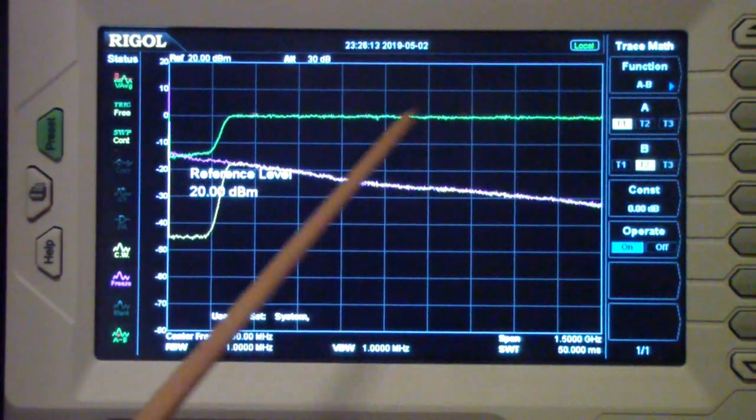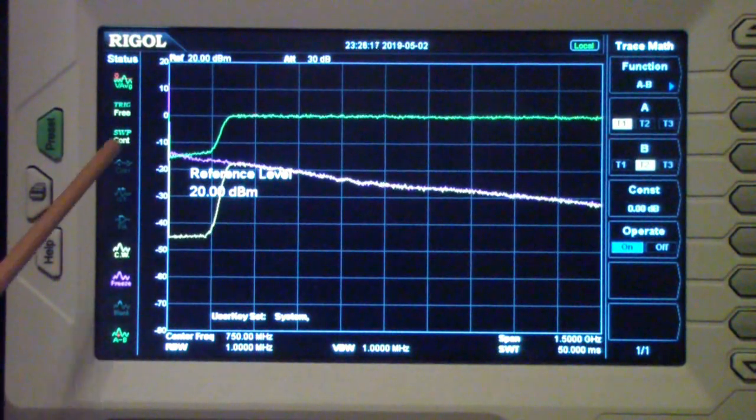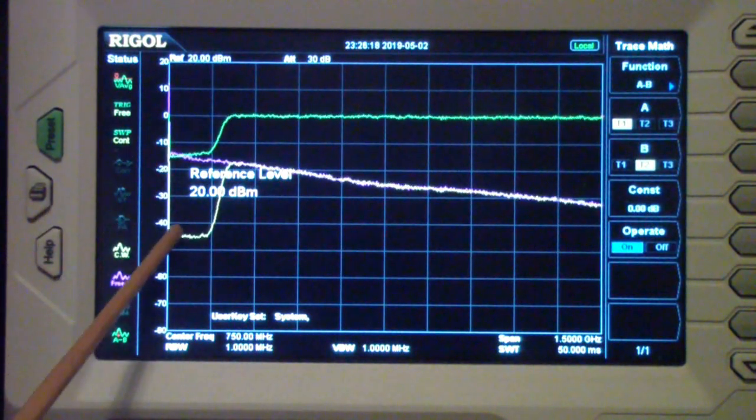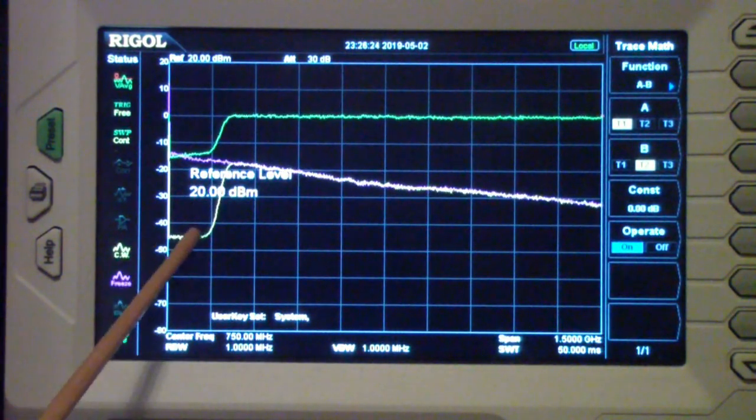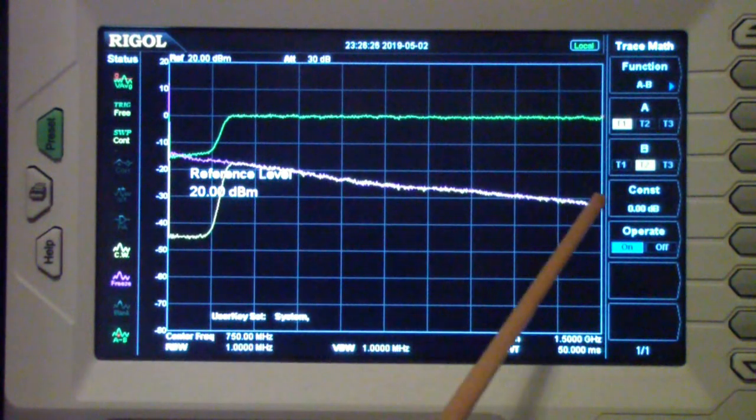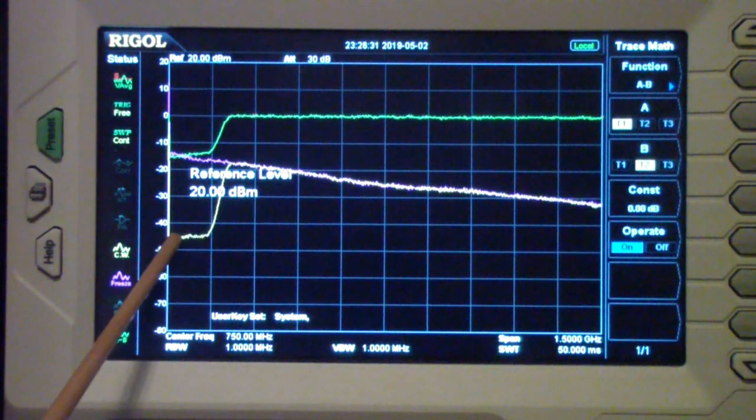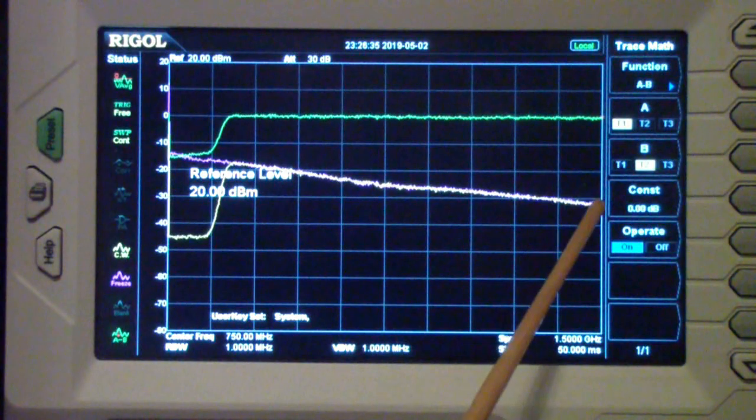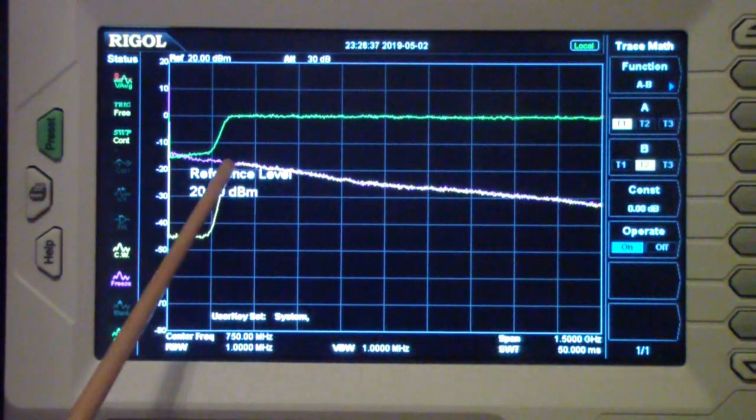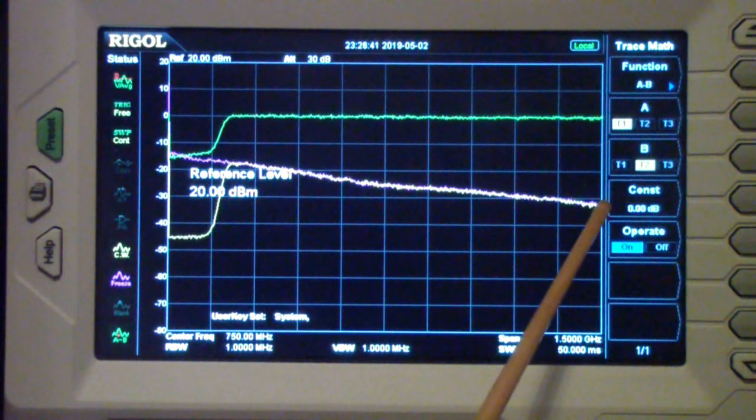I then hooked up the bandpass filter and used trace A to display it. Well, as you see, the filter follows, but unfortunately because the noise generator output is not level, it follows the noise generator all the way down.